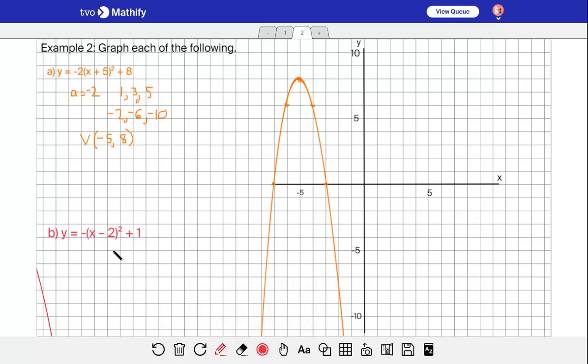Last one here, in this case there's just a negative, so that means that the a value is negative 1. So the 1, 3, 5 all gets multiplied by negative 1, so it would be negative 1, negative 3, and negative 5. Let's identify where the vertex is. It's x minus 2, so the x coordinate is 2, and positive 1. So 2, 1 would be right there.